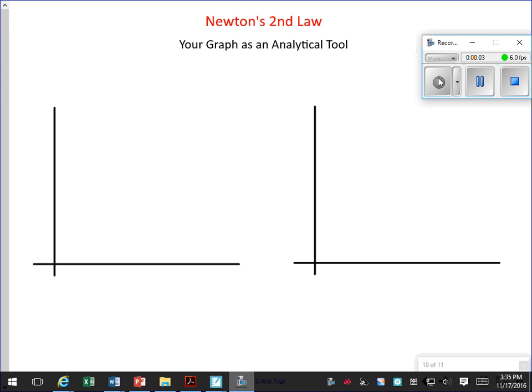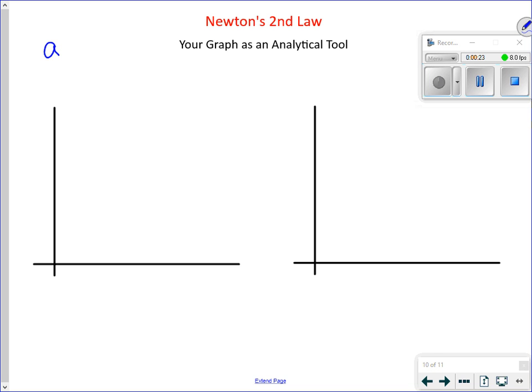Okay, so here's where we're at. We have come up with two separate relationships that have allowed us to define Newton's second law. Newton's second law says two things: that an object's acceleration is proportional to the net force applied, and that a graph of acceleration versus net force is linear.